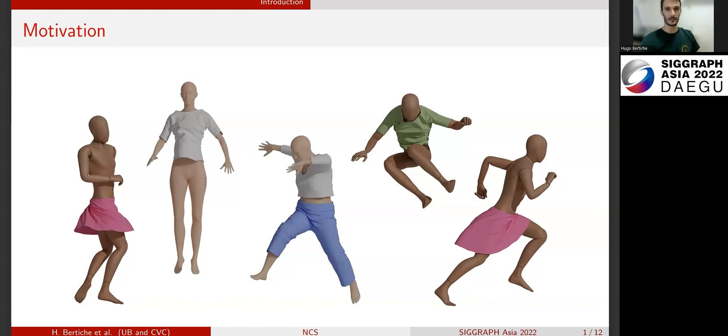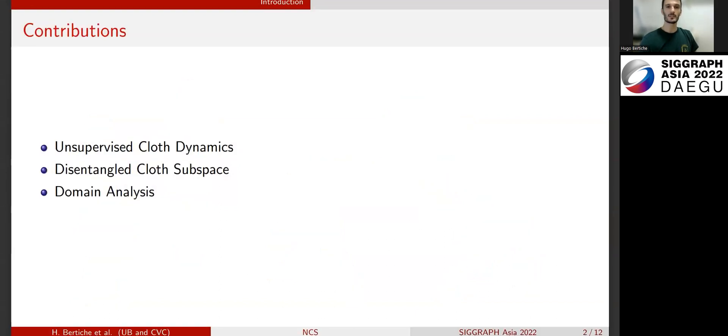On the other hand, recently deep learning has shown success in these tasks thanks to fast inference time. In this work we present the first methodology able to learn cloth dynamics in an unsupervised loop.